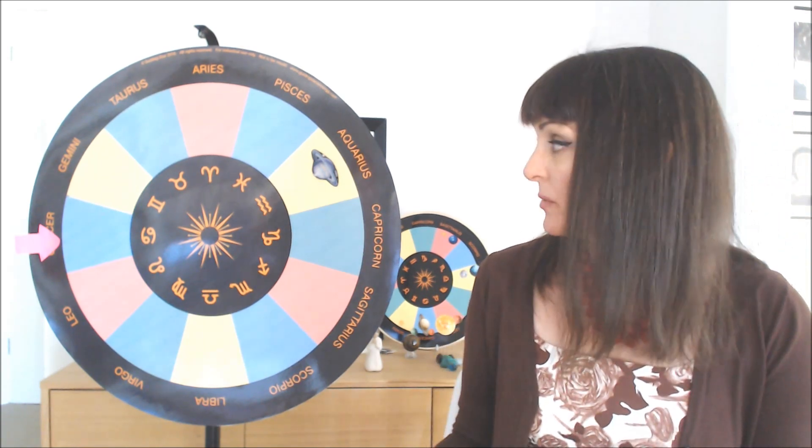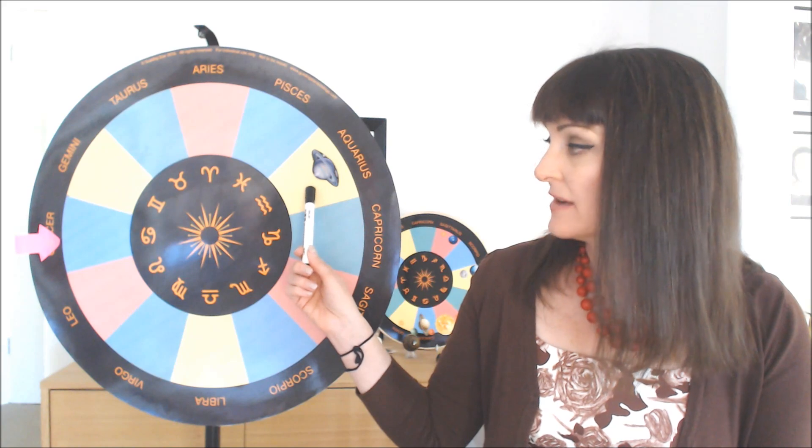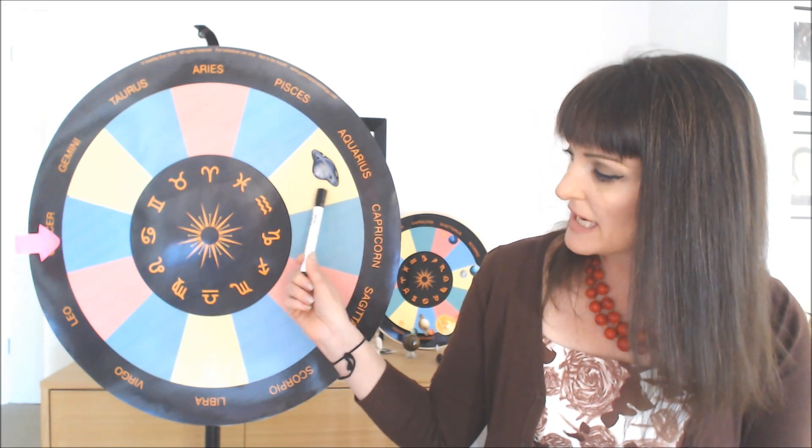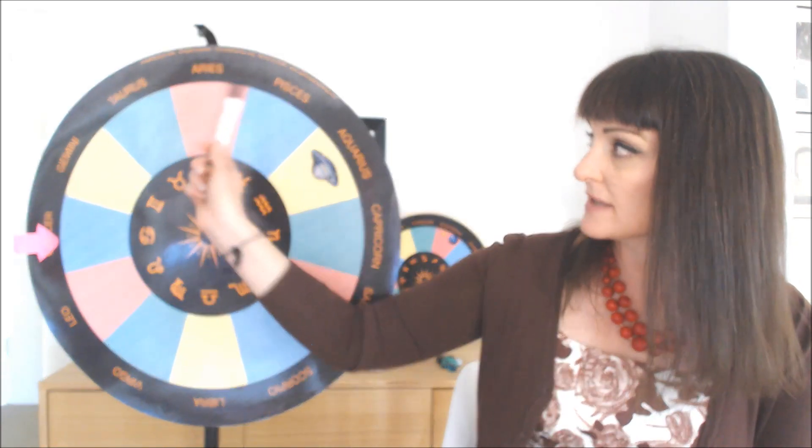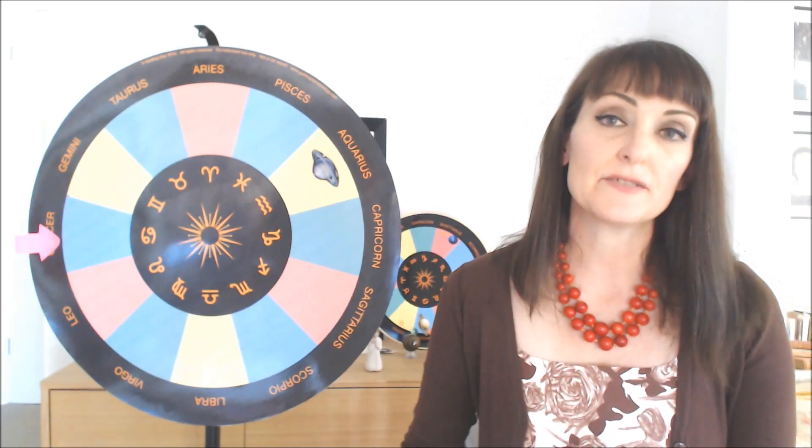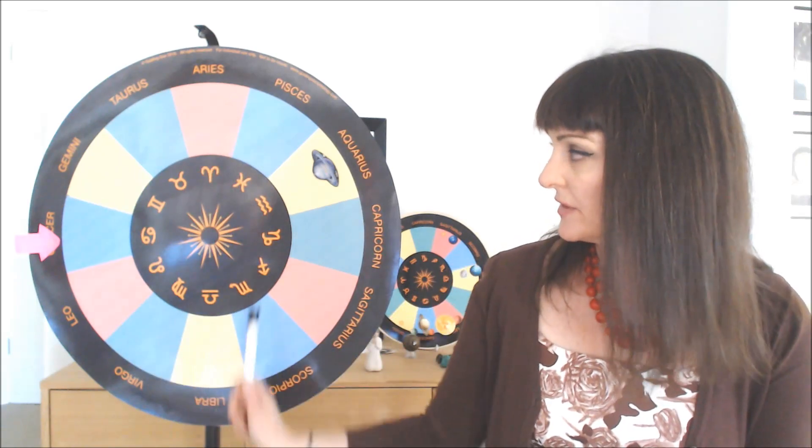Now, at the same time as we've got Saturn in the eighth house in the Hindu system, he is also making an aspect to the second house opposite him, the fifth house down here, and obviously the eighth house where he is and the 10th house. So all of these realms of life, second, fifth, eighth, and 10th are getting a triggering by this energy in the Vedic system of blockage and restriction and holding back by Saturn.